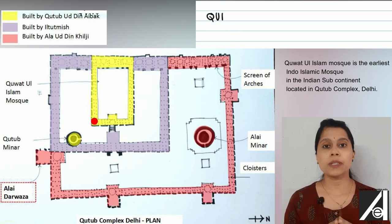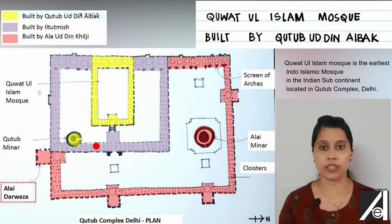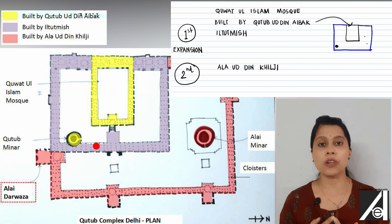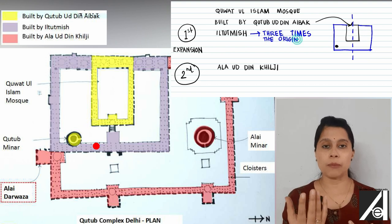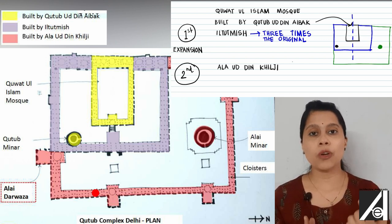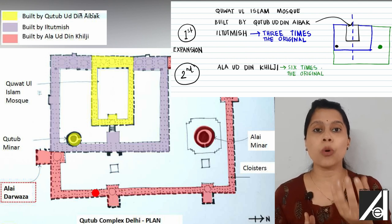First, let's rewind a little to understand the context in which it was built. The Qutb-ul-Islam Mosque was built by Qutbuddin Aibak. After that, Iltutmish felt the need to expand it, so he added a symmetrical cloister around the mosque, making it three times the original size. Then Alauddin Khilji came into power and added yet another cloister — this time asymmetric — enlarging the mosque to six times its original size.